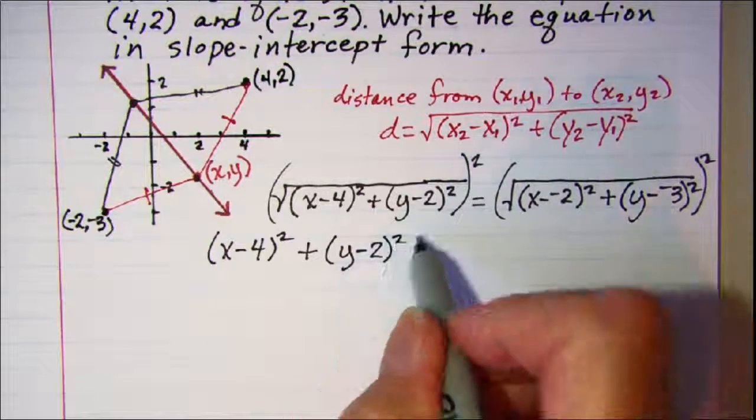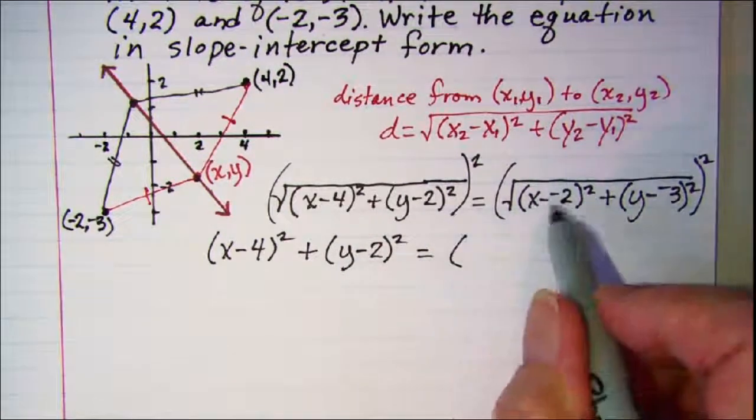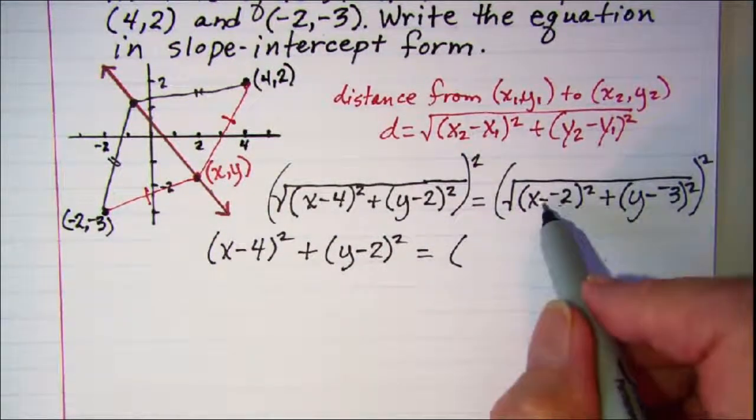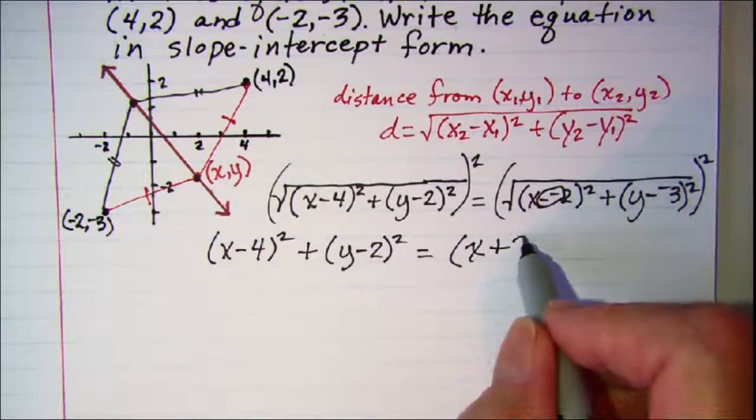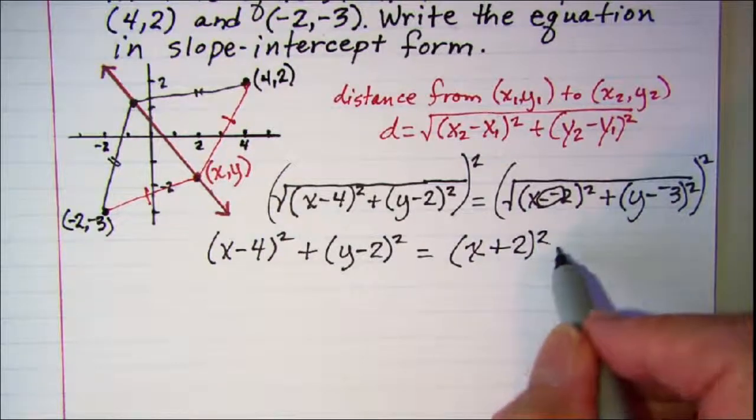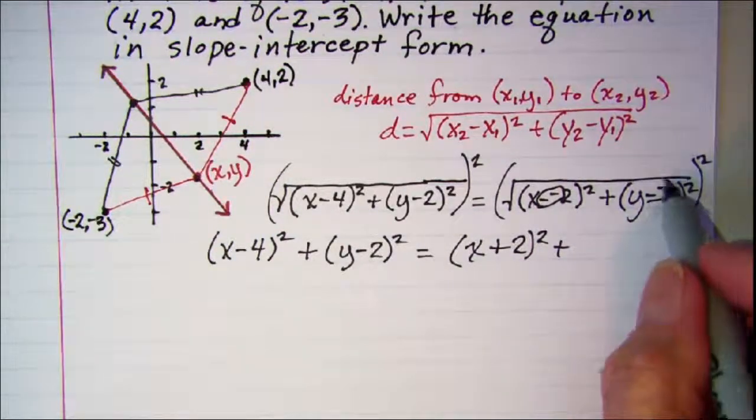So I have (x - 4)² + (y - 2)² equals, and then on the other side let's make this minus minus into a plus, so there's (x + 2)² plus, and then here's another minus minus, that's (y + 3)².